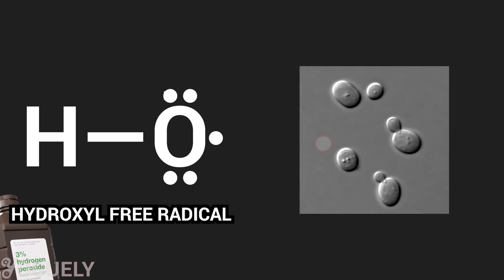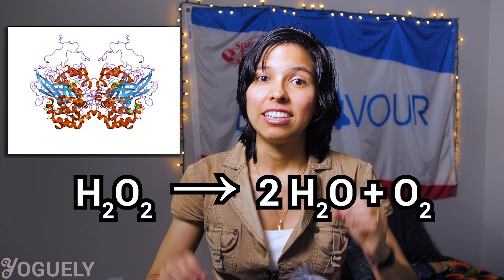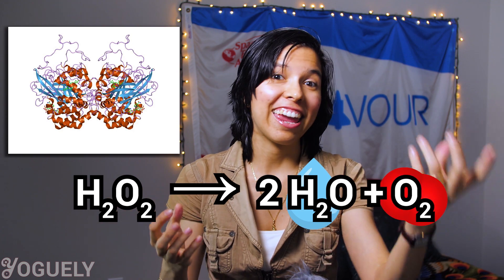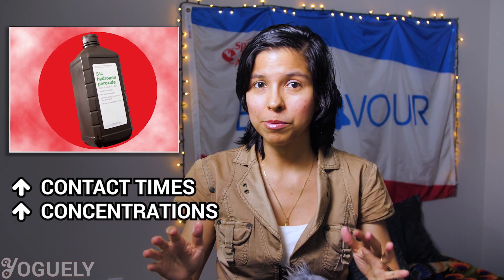Hydrogen peroxide is very effective as a disinfectant against microorganisms like yeast, fungi, bacteria, bacterial spores, and viruses. However, some organisms have a defense mechanism against H2O2. Some organisms produce a protein called catalase that serves as a way to protect against annihilation. Catalase is an enzyme that accelerates the degradation of hydrogen peroxide into harmless water and oxygen. To overcome organisms that can tolerate a bath of hydrogen peroxide, use longer contact times and higher concentrations — their defense mechanism won't be able to hold off.